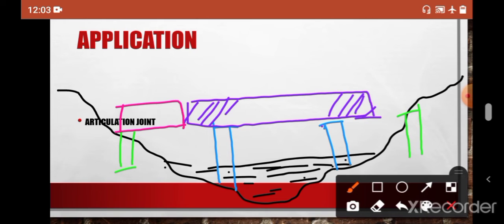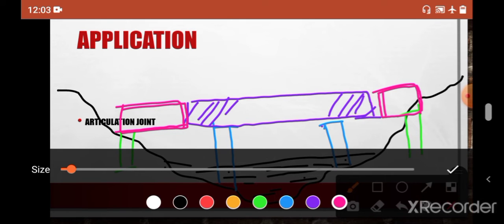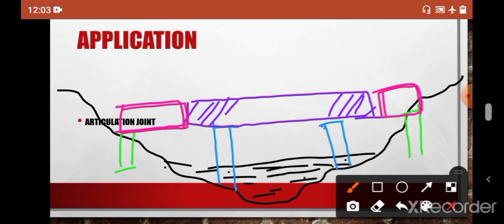So now our bridge construction is completed and here you can definitely find out the internal hinges. Where is it? Yes, you are absolutely correct, this is the internal hinge part.